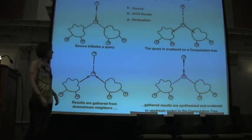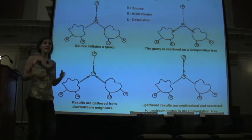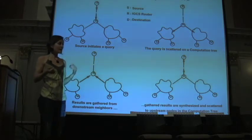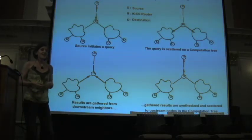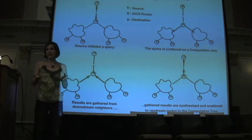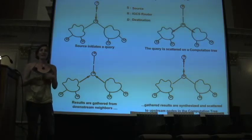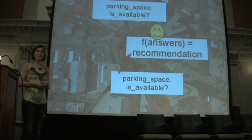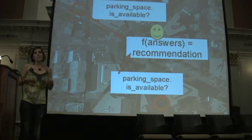What we're seeing here is essentially that you have a source of a query on the top left, and that source sends the query out to their neighbors. The neighbors receive that query, inspect the contents of it, and if it's relevant, they might act on it and/or pass it on to their neighbors. This happens repeatedly until the query is spread throughout the network, and then the information is sent back to the source, aggregated along the way. At the end, you can get something like: is there a parking space available? The query comes back, you have a function that acts on that information and gives you a recommendation about whether to go left or right to be more likely to find a parking space.